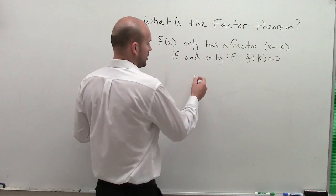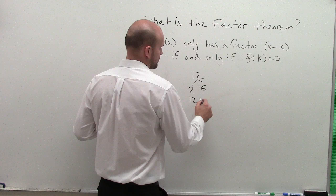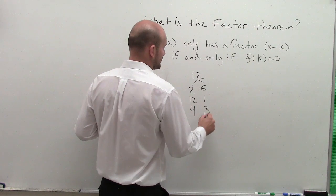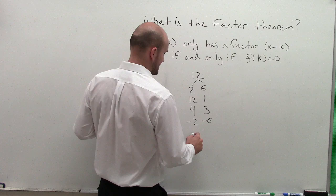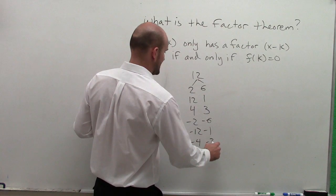Now remember factors. Let's take a look at all our factors of 12. Factors of 12 are 2, 6, 12, 1, 4, 3, negative 2, negative 6, negative 12, negative 1, negative 4, and negative 3.